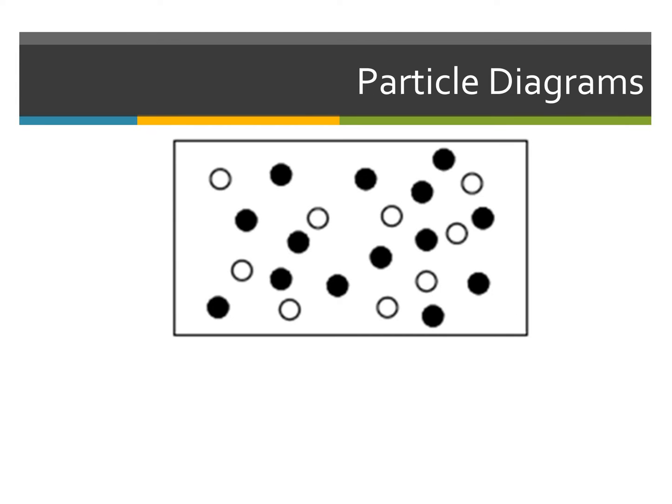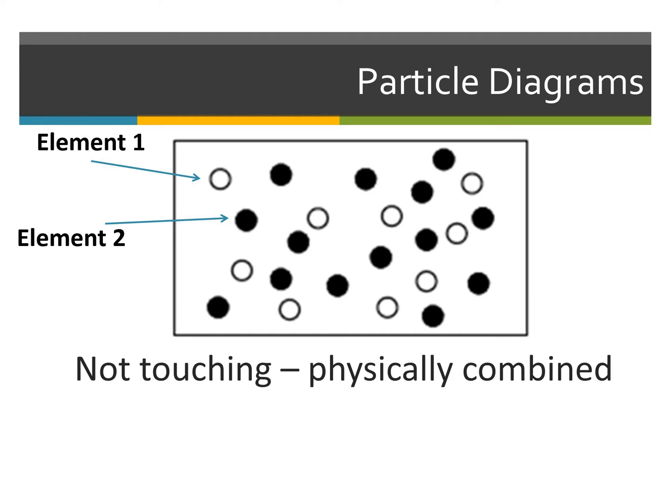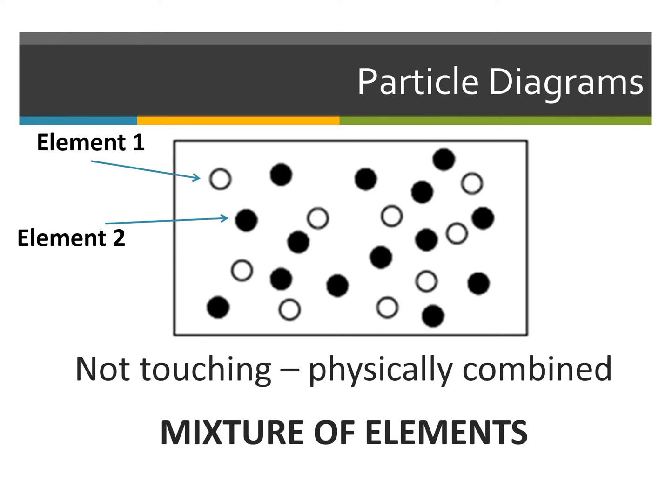If we look at this next particle diagram, we see that we have two different kinds of dots — two different types of particles. We're going to call the white one element one and the other one element two. These items are not touching; the particles are not touching. That means they are physically combined — they are together in the same space but are not chemically combined with each other. Since we have two different elements in one given space, we're going to be considered a mixture of elements.